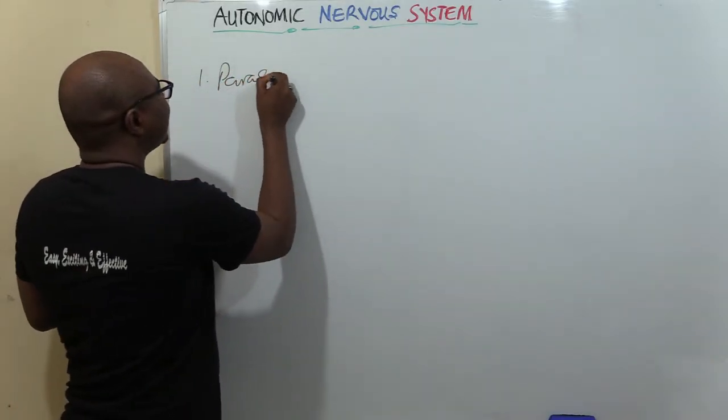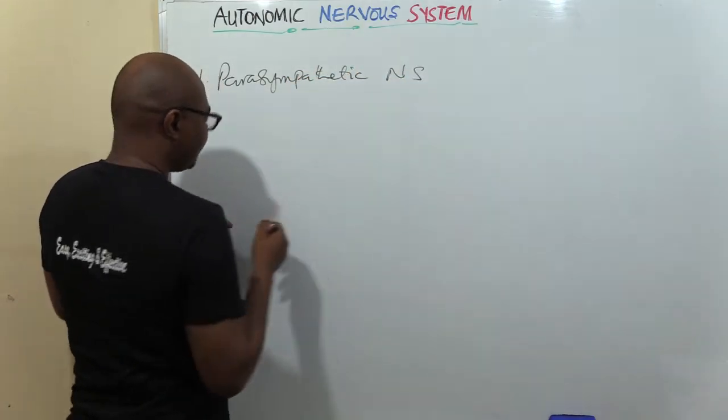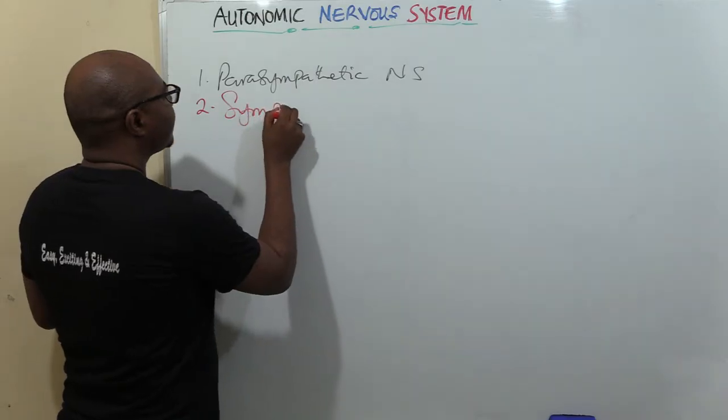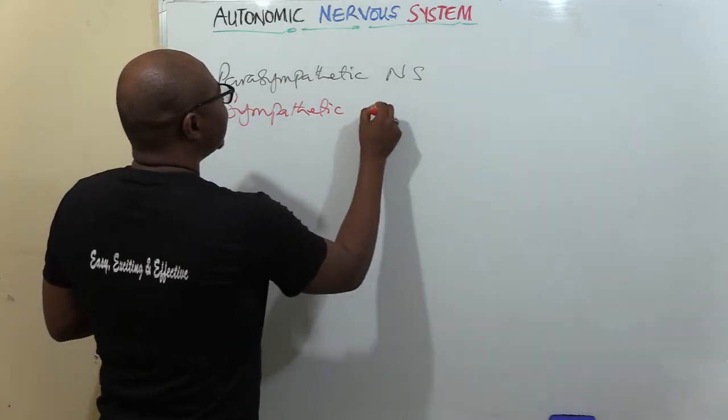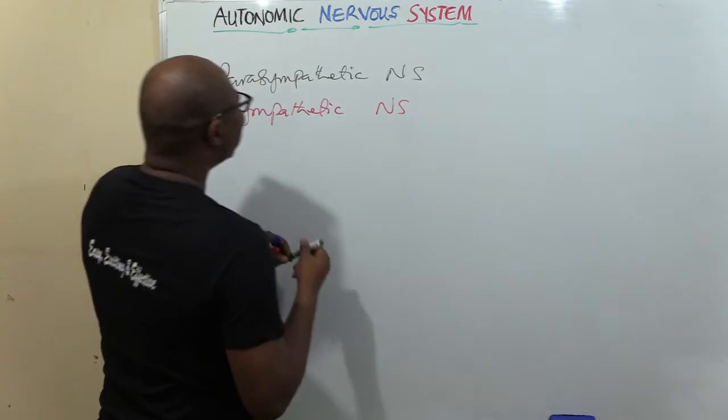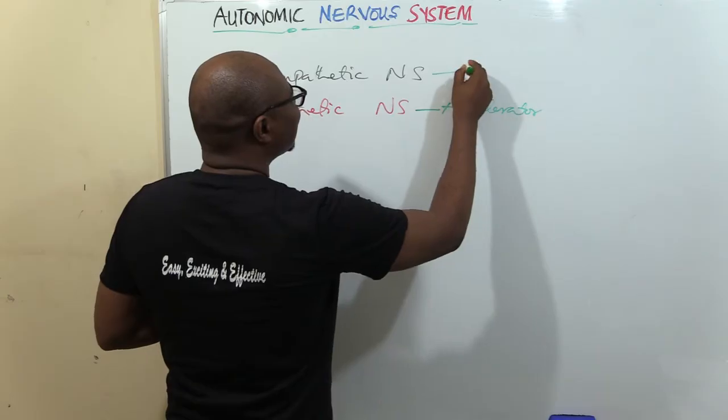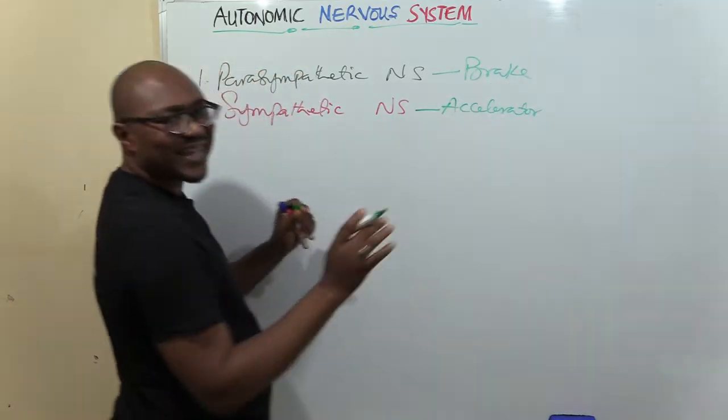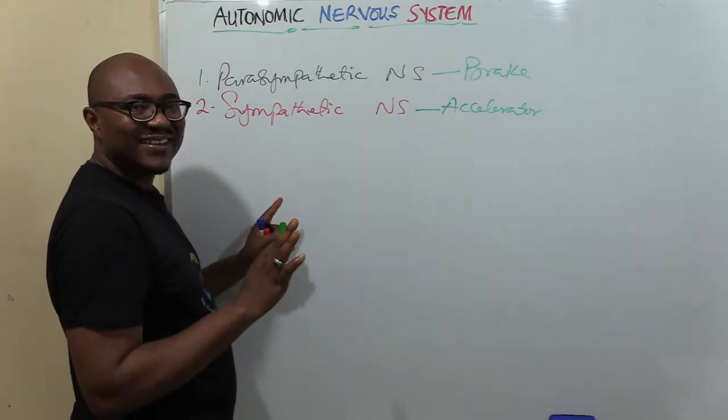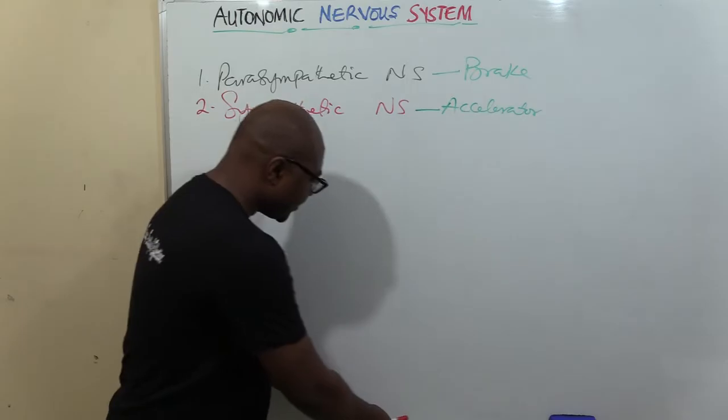You can't do the two at the same time. As you are pressing on the brake, you are removing your leg from the accelerator. This is how they function. They are known as: one is the parasympathetic nervous system, the second one sounds almost like it, it's called sympathetic nervous system. So when you look at the two, how they function, this one functions as the accelerator, this one functions like the brake most of the time.